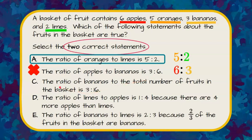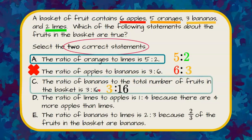Choice C: the ratio of bananas to the total number of fruits in the basket is three to sixteen. My ratio of bananas starts with three, and now I need to add up all my fruit: six plus five is eleven, plus three is fourteen, plus two is sixteen. So I have a ratio of three to sixteen — bananas to total — and that checks. C would be true.